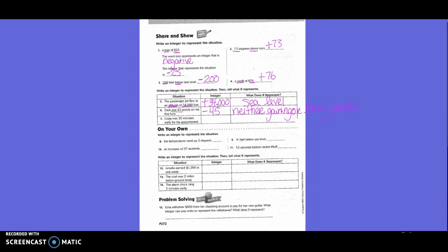Craig was 20 minutes early for his appointment. We'd underline early and 20 minutes. Is it positive or negative? Yes, it's a good thing that you're early for an appointment and not late. But if his appointment was at 8 o'clock and he got there at 7:40, it'd be negative because it's beforehand. So negative 20. What does zero represent in this case? On time, or the time for his appointment.